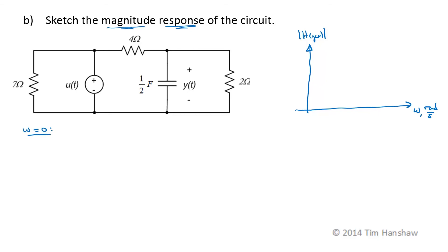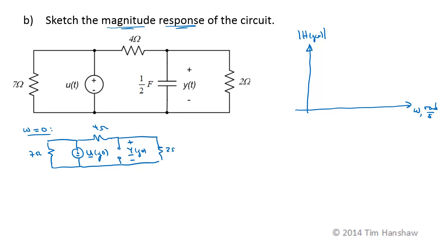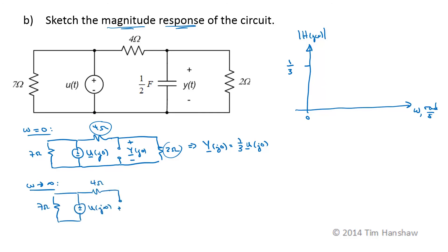When omega equals 0, the capacitor looks like an open circuit. We have the 7 ohm resistor, voltage source U of j0, 4 ohms, and 2 ohms as a voltage divider between the 2 ohm and 4 ohm resistances. So Y of j0 equals 1 third times U of j0, and H of j0 is 1 third. As omega goes to infinity, the capacitor looks like a short circuit at high frequencies, so there is no voltage difference across it. Y at j infinity equals 0, meaning the gain goes to 0 at high frequencies.